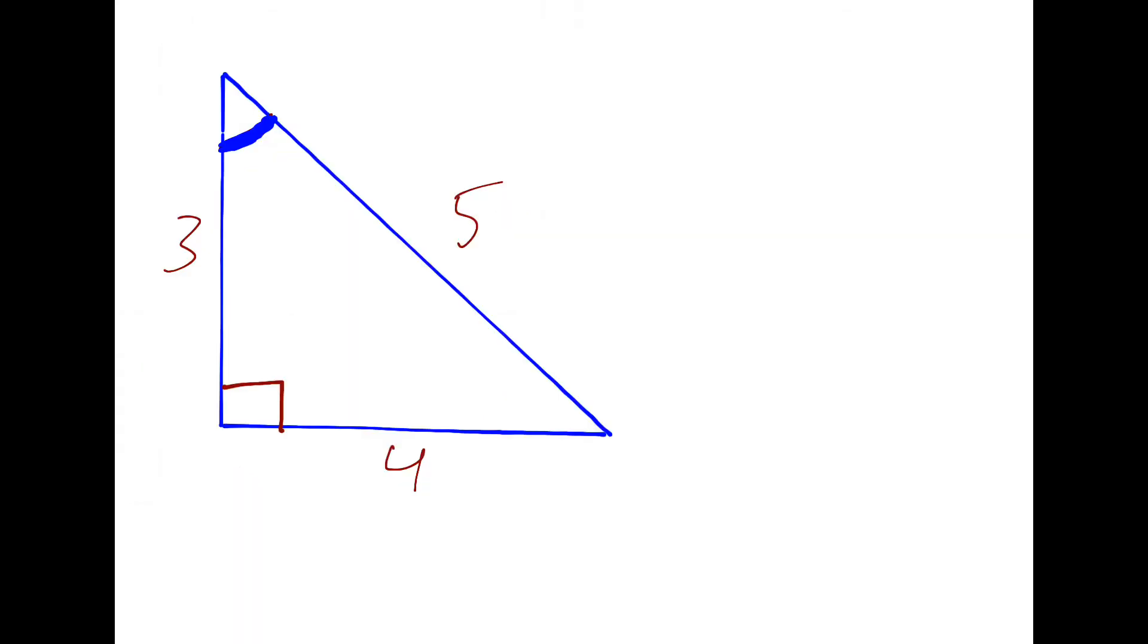So let's think about a right triangle, nice, even round numbers like three, four, and five. And if I'm looking at this angle over here in the corner, five is going to be considered the length of the hypotenuse, four is the length of the opposite leg, and three is the length of the adjacent leg. So in this case, adjacent means right next to, and opposite means across from.